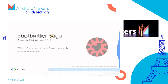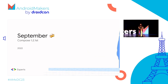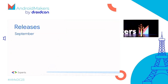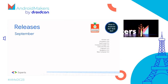Moving on to September. We had DroidCon New York — an amazing conference. Bill and I gave a talk about Molecule. The Android Gradle Plugin 7.3 was released. We've got Android Studio Flamingo Canary 2, Electric Eel Beta 1, Dolphin Stable, and some AndroidX patch updates. Three installments of Now in Android and two published episodes of the Android Developer Backstage podcast.